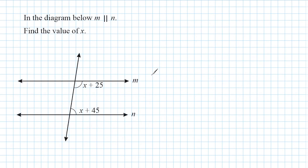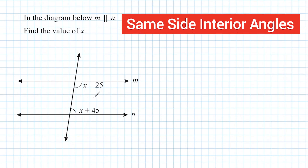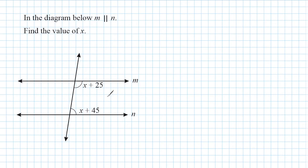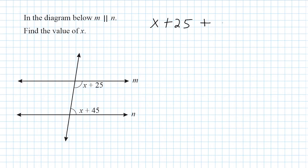Now this problem involves angles that are both located on the same side of our transversal and both in the middle of our parallel lines, so that makes them same side interior angles. What we know about same side interior angles is that they have an angle sum of 180 degrees. So we have to approach setting up our equation differently — this value plus this value added together equals 180. So: x plus 25 plus x plus 45 equals 180 degrees.